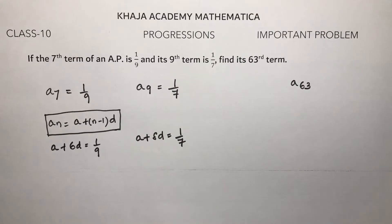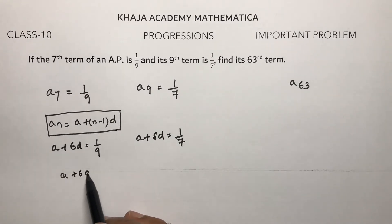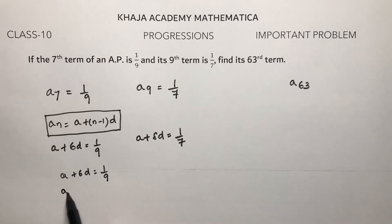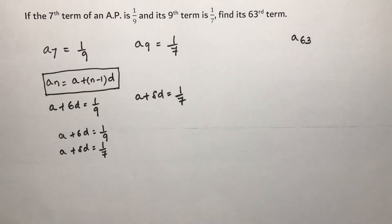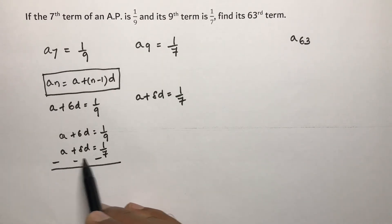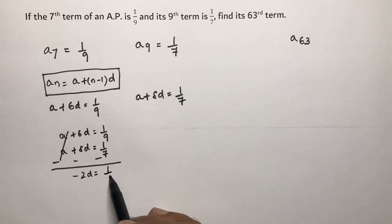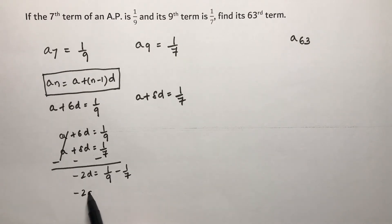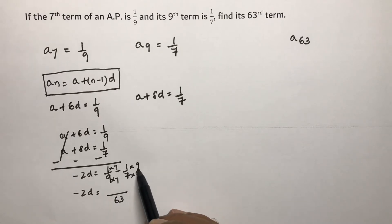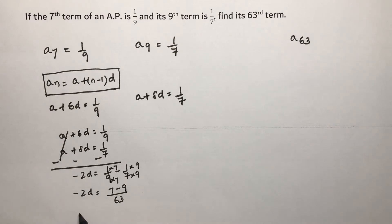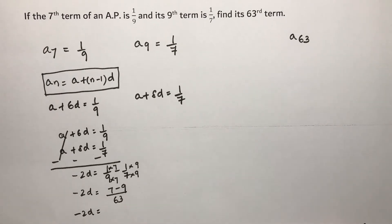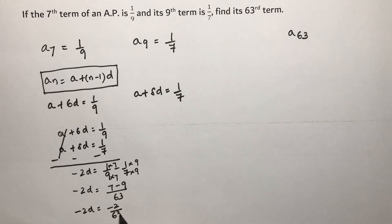Now these two equations I will eliminate. a + 6d = 1/9 and a + 8d = 1/7. Subtracting: a and a cancel, 6d minus 8d is minus 2d, equals 1/9 minus 1/7. The LCM of 9 and 7 is 63, so 1/9 minus 1/7 gives 7 minus 9 over 63, which is minus 2/63. So minus 2d equals minus 2/63, the minus 2 cancels, giving d = 1/63.